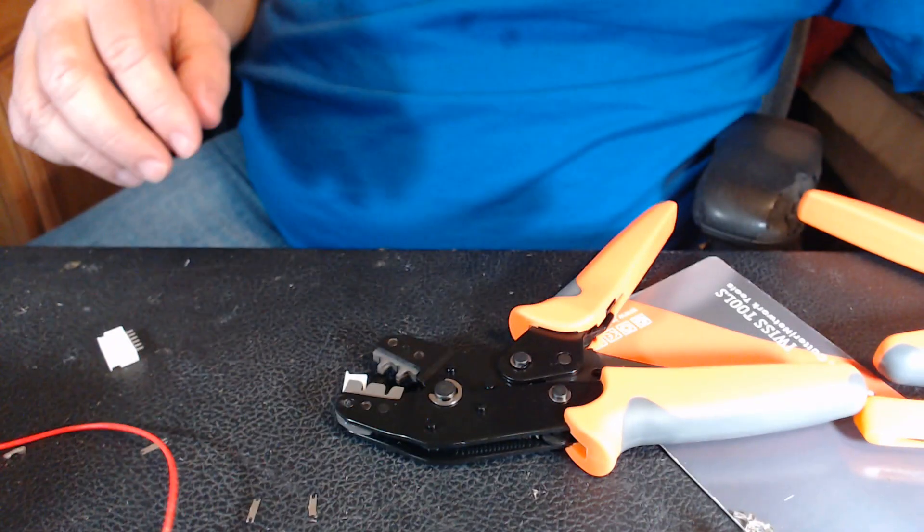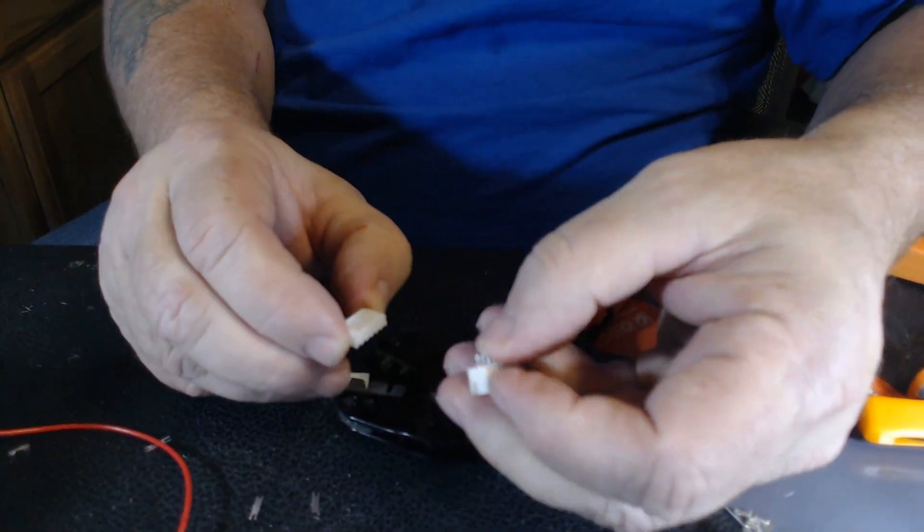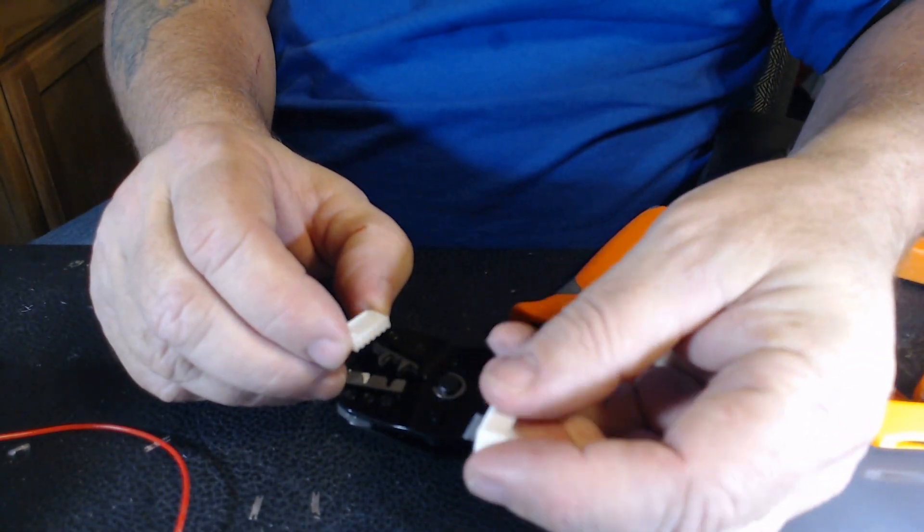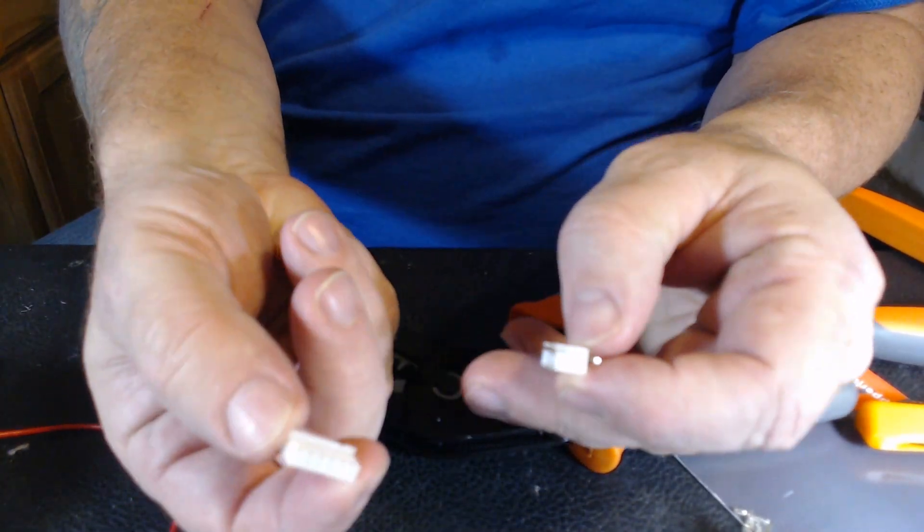Now, this is a JST connector right here. Right here, the one with the pins, is the one that solders to the main board. The other one is the one the wire connects to.